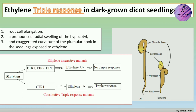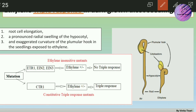The triple response refers to three different responses observed in dark-grown dicot seedlings exposed to ethylene. The first is inhibition of root cell elongation, the second is swelling of the hypocotyl, and the third is curvature of the plumular hook. In the picture shown, one seedling is in the presence of air and the other in the presence of ethylene — you can see the hypocotyl swelling and the hooking of the plumule, as well as altered root elongation.